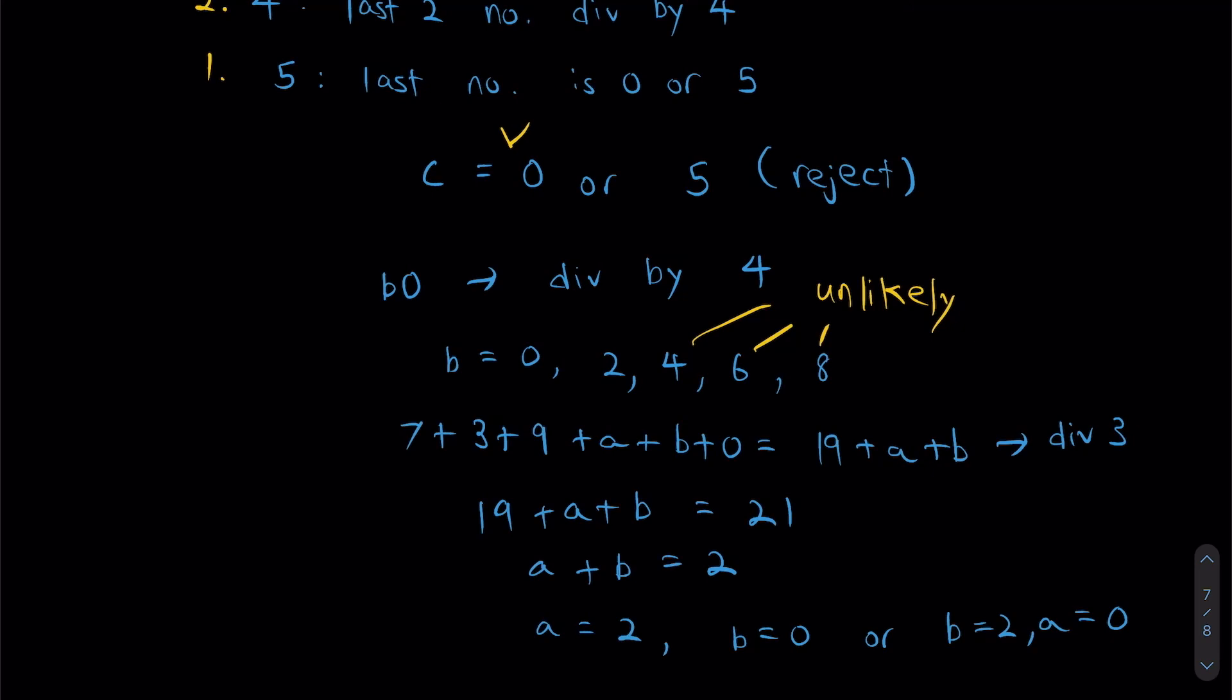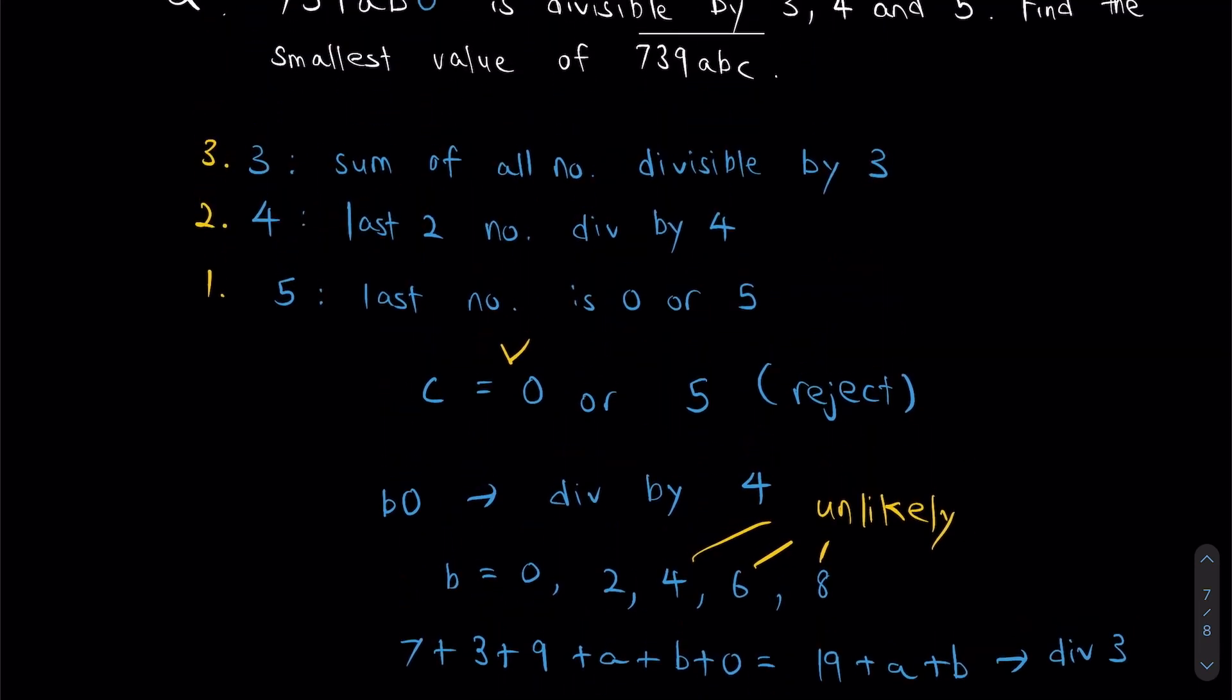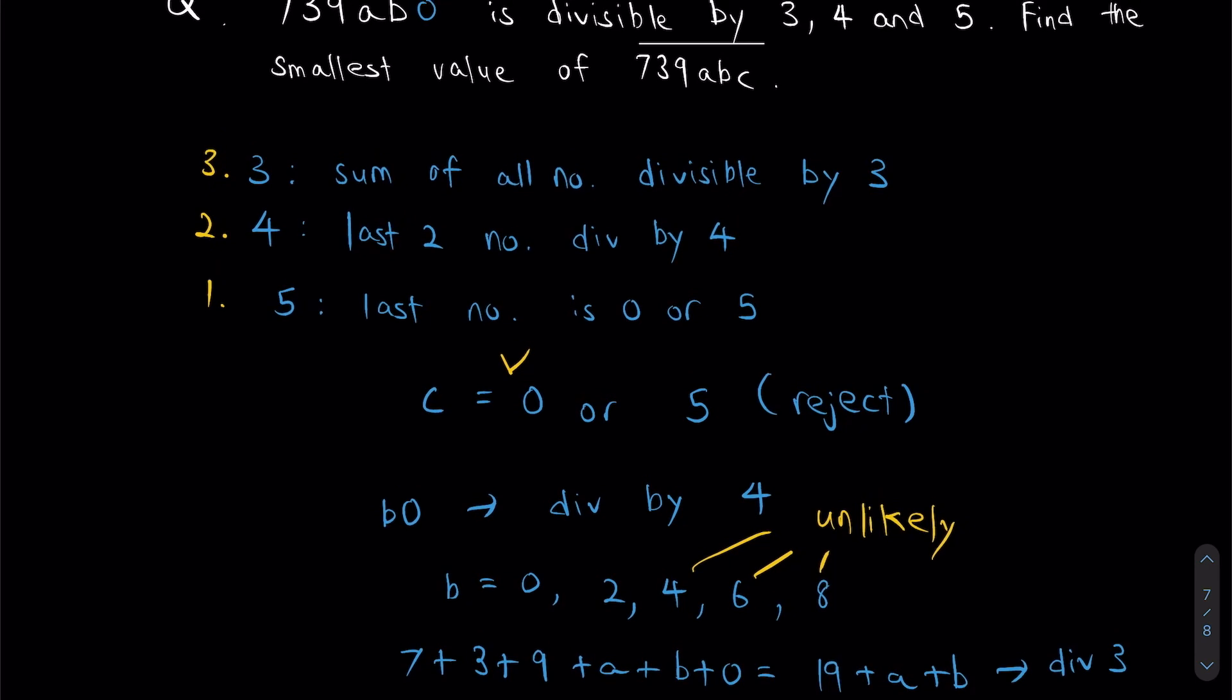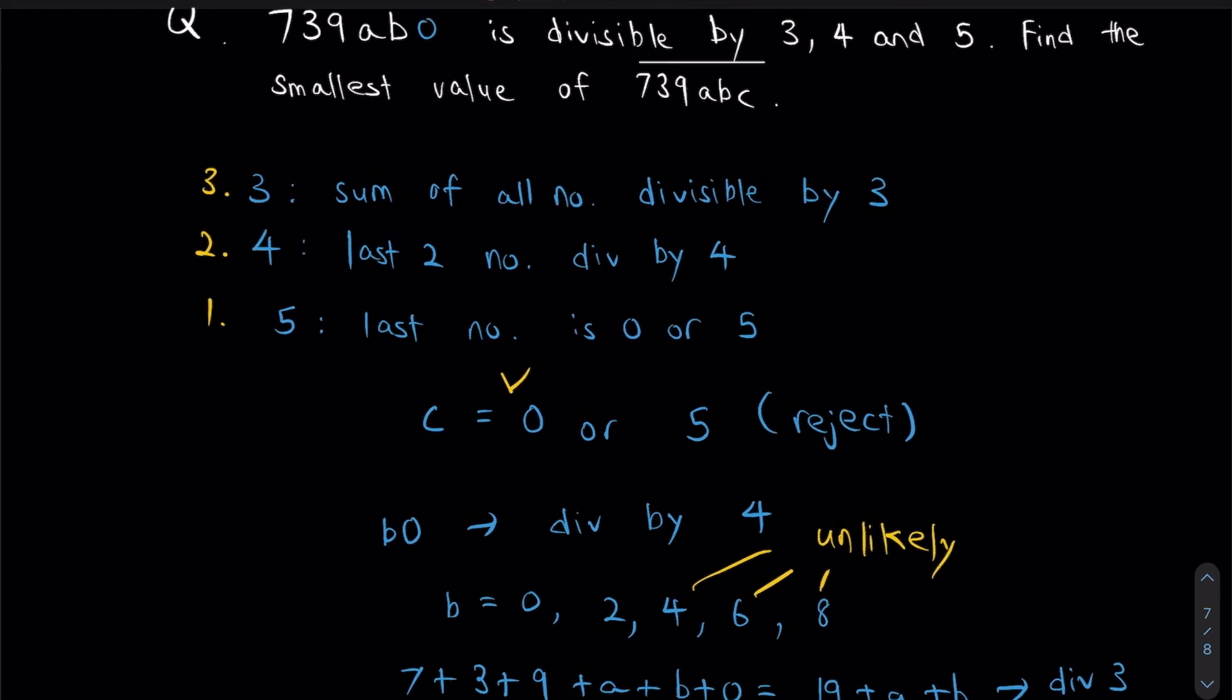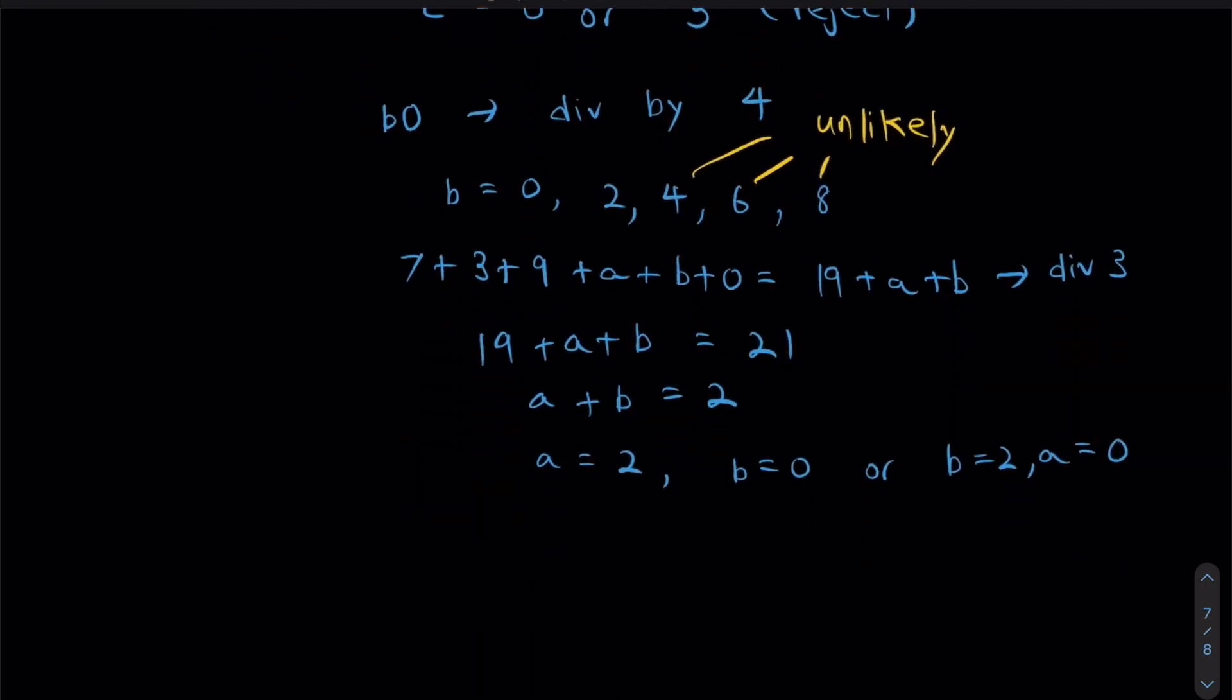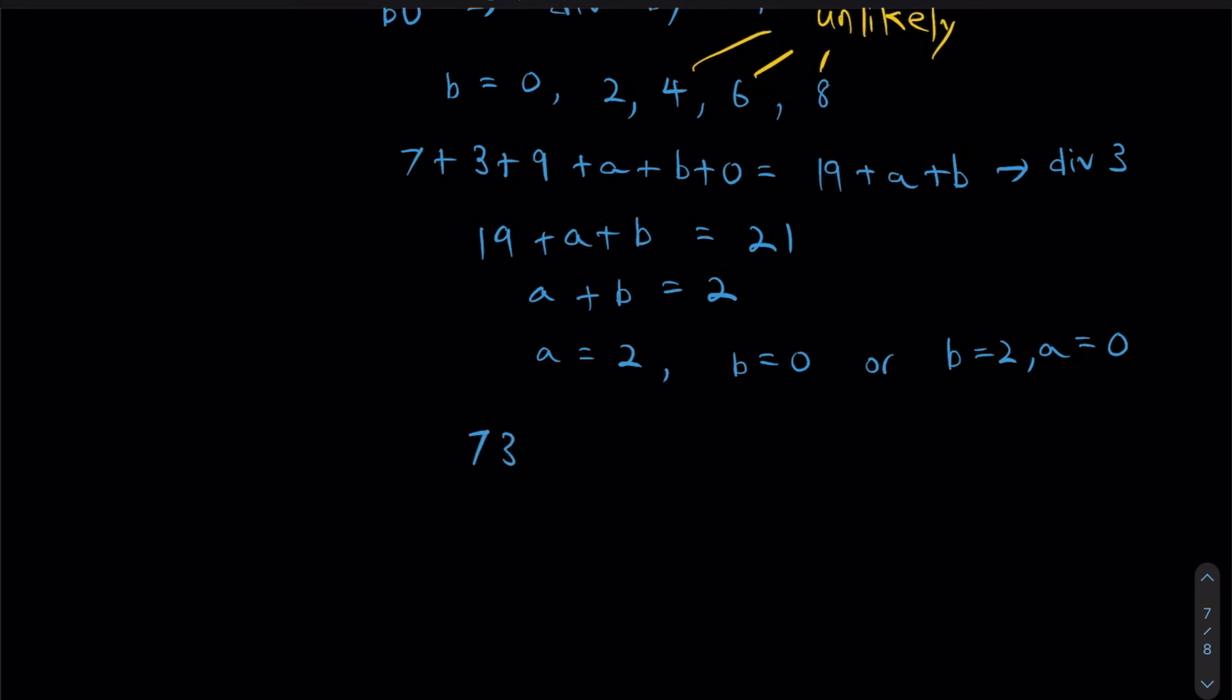Let's go back to the question one final time. If we want the number to be as small as possible, should we have A equals to 0, or B equals to 0? Shouldn't be too hard. We should have A equals to 0. Because if we compare these two numbers, 739,020 versus 739,200, which one's smaller? Obviously, the first one. Therefore, because the question asks us to find the smallest possible number, we only have one possibility. And this number right here will be my answer.